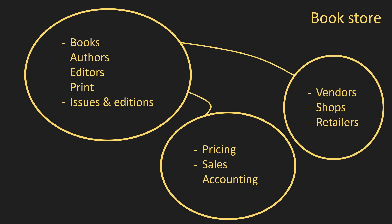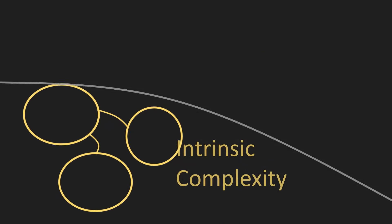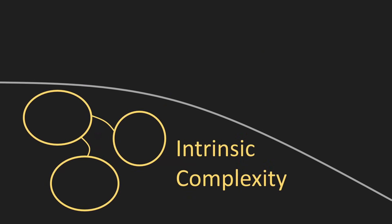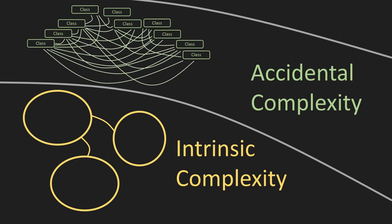Over the years, we have learned to recognize two circles of that software development inferno. One we refer to as intrinsic complexity — that is the complexity of the world. We cannot help it; it is inherent to the problem we are solving, so it will remain constant no matter what we do. The other is accidental complexity — the complexity we, developers, add on top of the intrinsic complexity of the world.